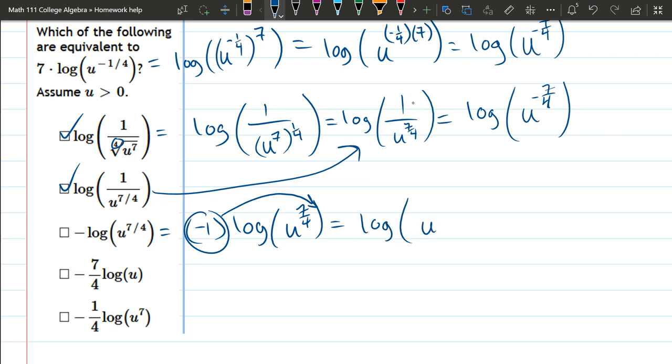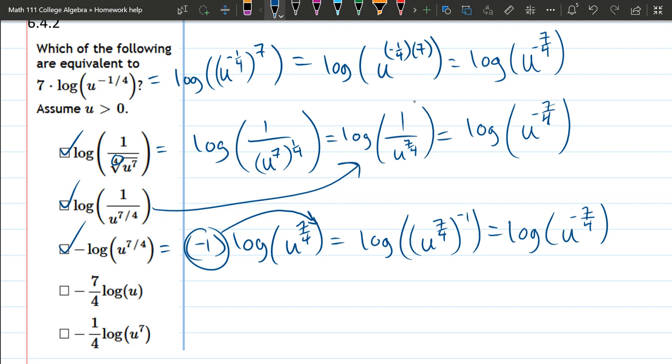We have a log of u to the seven fourths to the negative one. Now I have a power of a power, which is a product. That negative seven fourths times negative one, or positive seven fourths times negative one, is negative seven fourths. Again, that is the same as we get at the top.